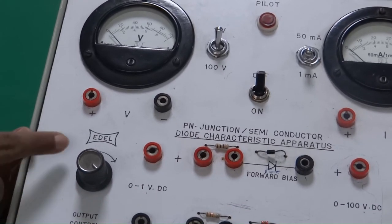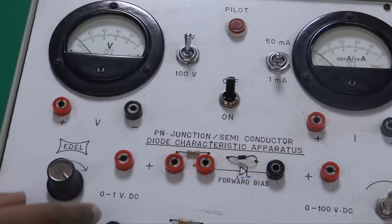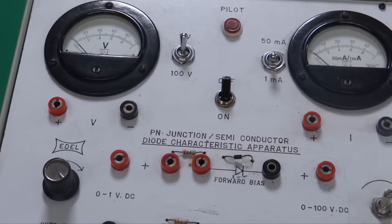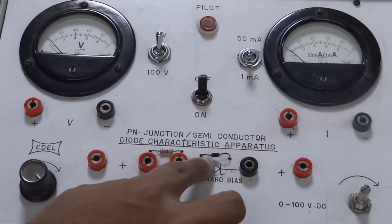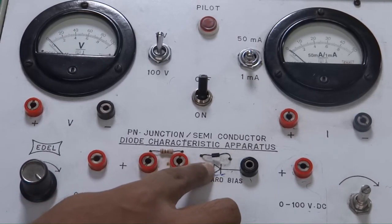We will use this left hand side device, that is the range for the forward characteristics. You can see there is a current resistance and then we have got this black one is the PN junction.